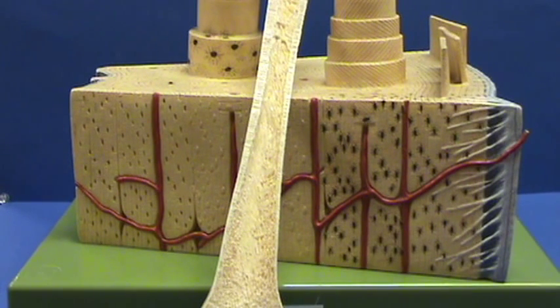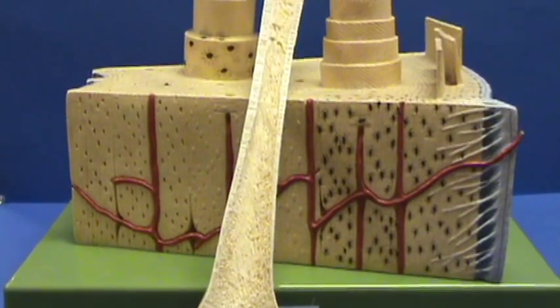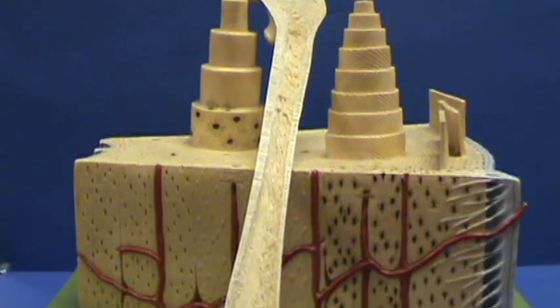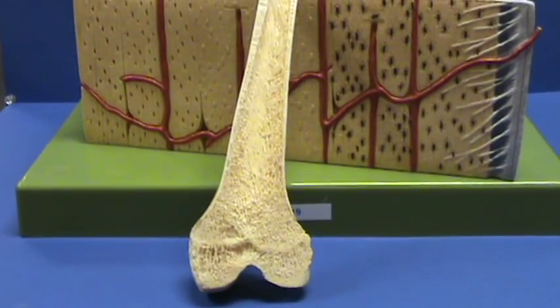This is the larger bone model that we have, and I have resting on the top of this bone model the split open femur, which you can see the length of as we pan up and down.